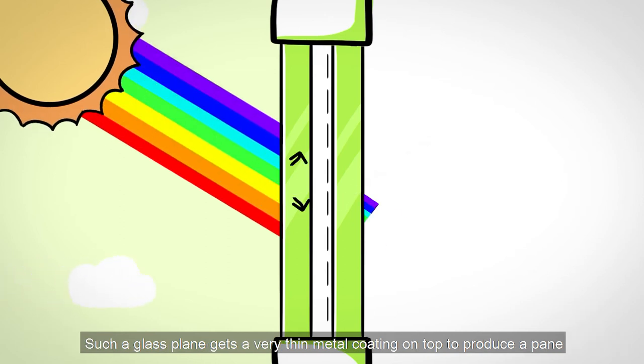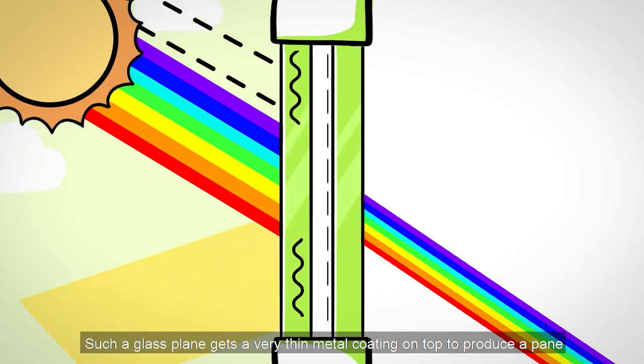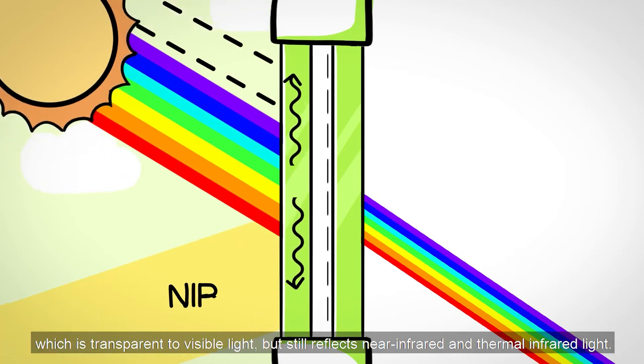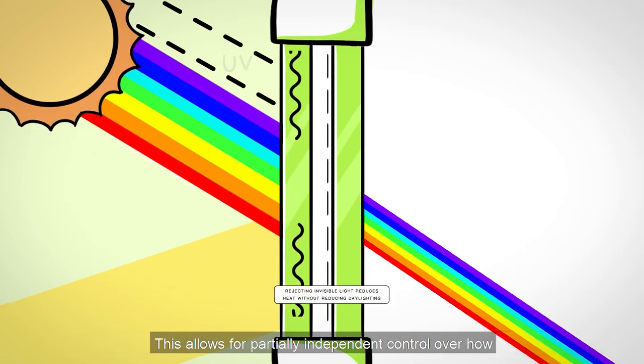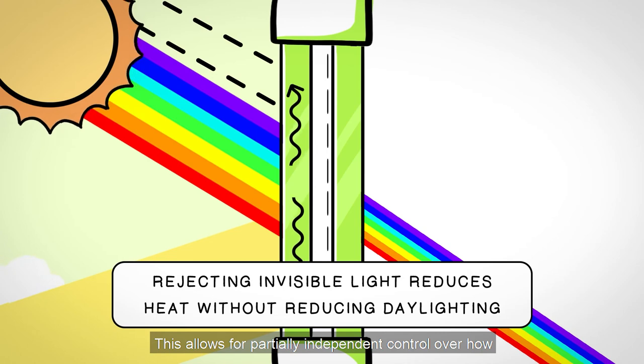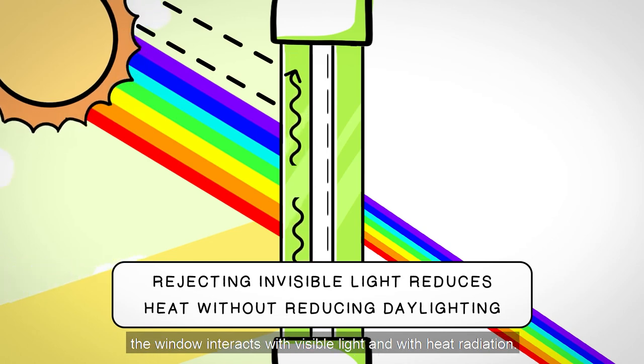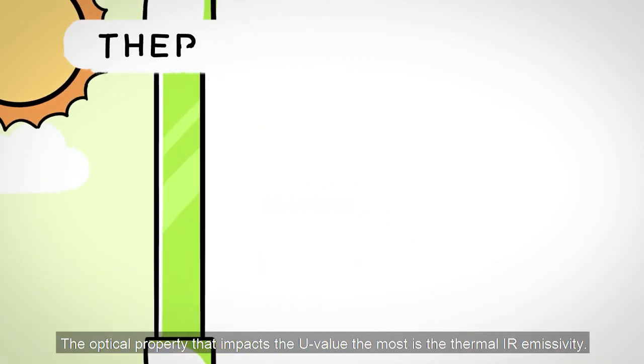Such a glass pane gets a very thin metal coating on top to produce a pane which is transparent to visible light, but still reflects near-infrared and thermal infrared light. This allows for partially independent control over how the window interacts with visible light and with heat radiation.